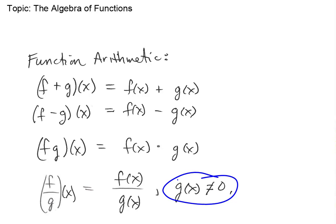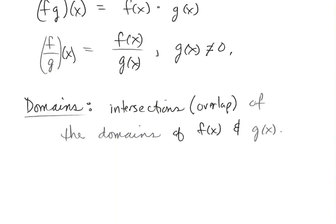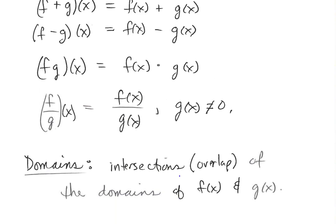We have to take that extra consideration into account when looking at domain. Speaking of domain, the domain of any of these combinations of functions is the intersection — meaning the overlap — of the domains of f and g individually. The overlap indicates where both domains exist simultaneously.